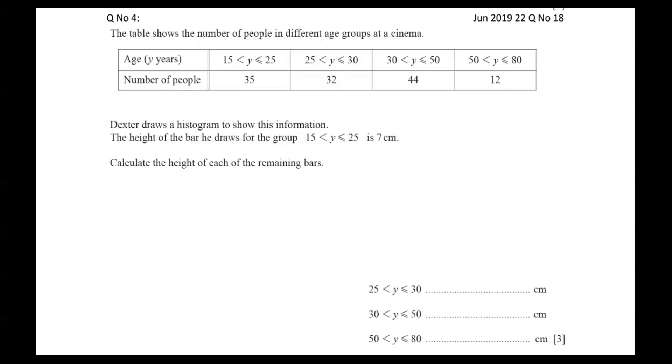We have frequencies: 35, 32, 44, and 12 given. Dexter draws a histogram to show this information and the height of the bar, you use bar or rectangle, same thing. He got the height for this column, height is 7 centimeters. This means for 15 to 25, you can see the same, and height is 7 given.